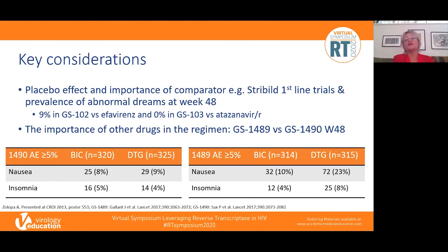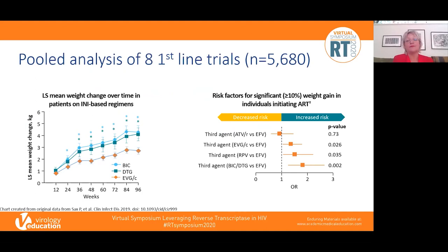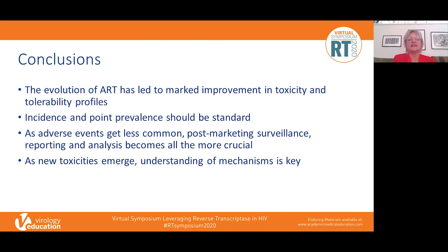In study 1490 both bictegravir and dolutegravir are with FTC/TAF, allowing a true head-to-head integrase comparison. In study 1489, dolutegravir is with abacavir/lamivudine, so differences in tolerability mainly reflect backbone effects. For weight: a pooled analysis of eight Gilead first-line studies showed bictegravir and dolutegravir associated with more weight gain than elvitegravir, and cohorts also show raltegravir less associated with weight gain than second-generation integrases.